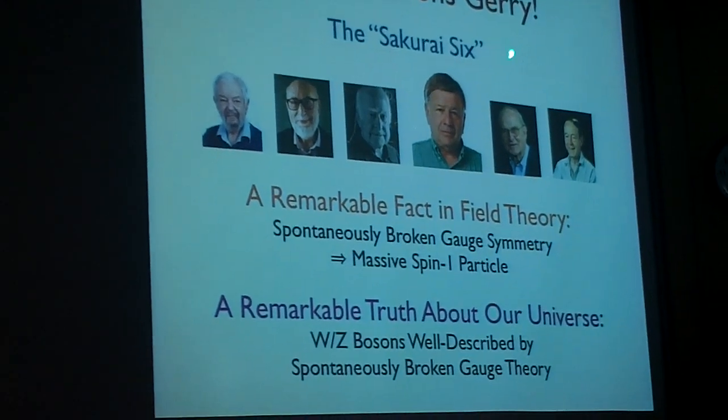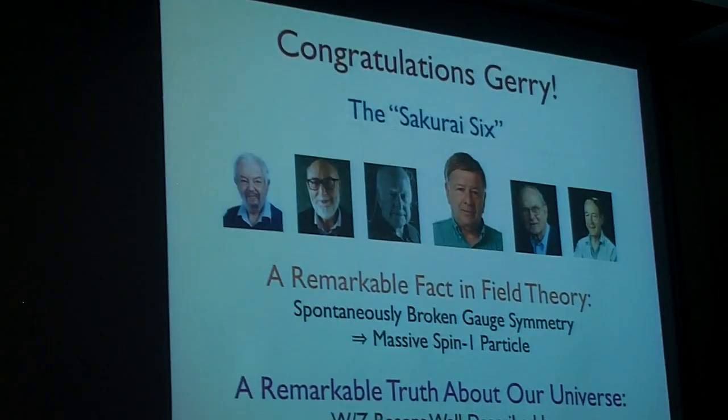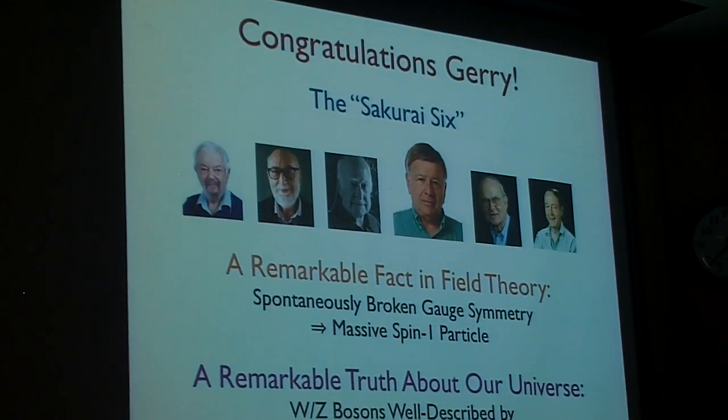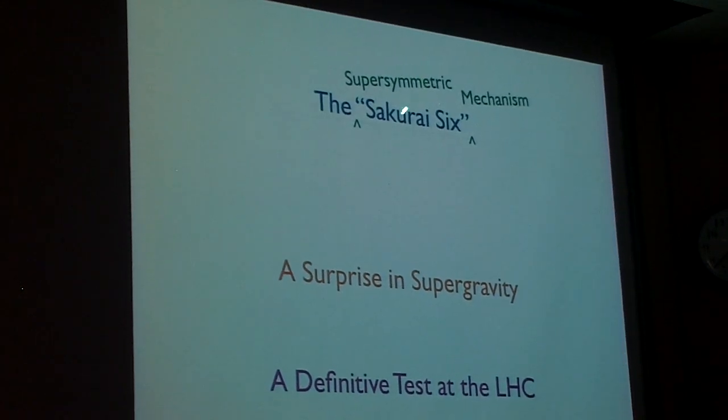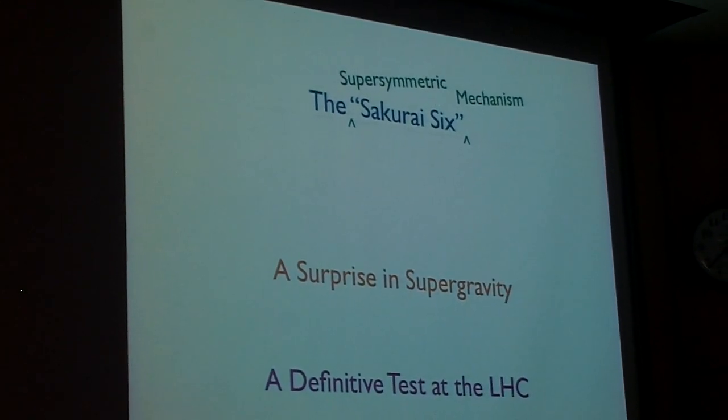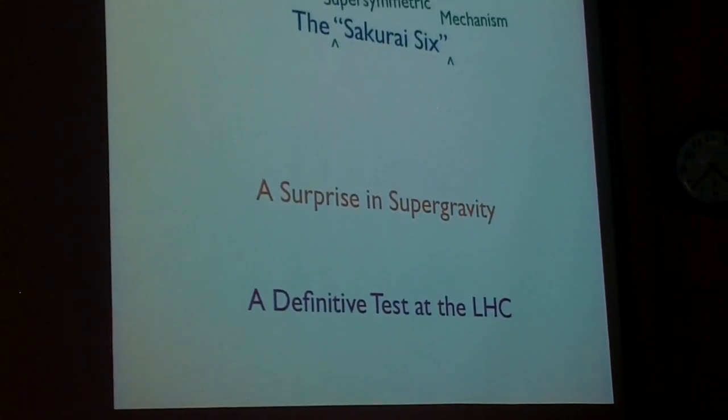In particular, I'm going to take this celebrated Sakurai-BEH mechanism, and I'm going to see what this mechanism looks like when you go to supersymmetric theories. So we're going to look at supersymmetric versions of the Sakurai-BEH mechanism. This is a mechanism that will give gravitinos a mass.